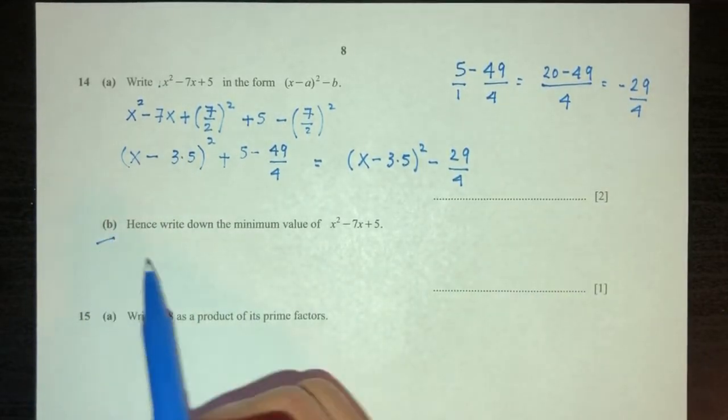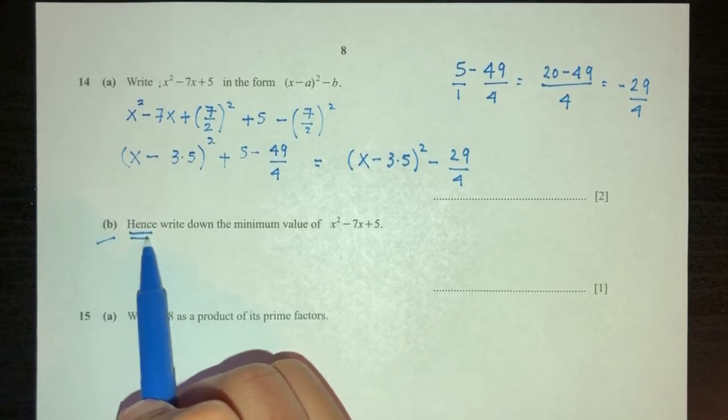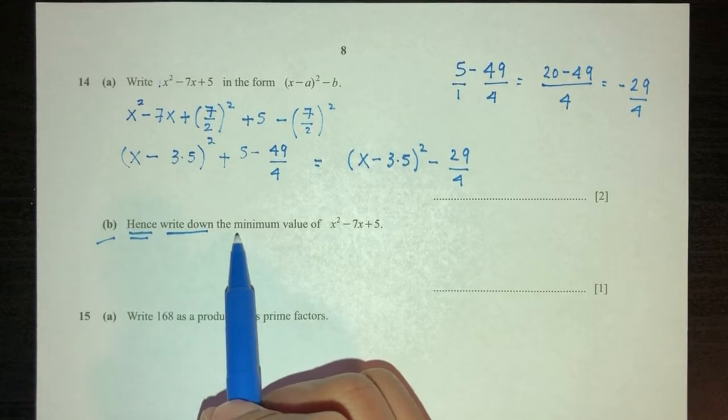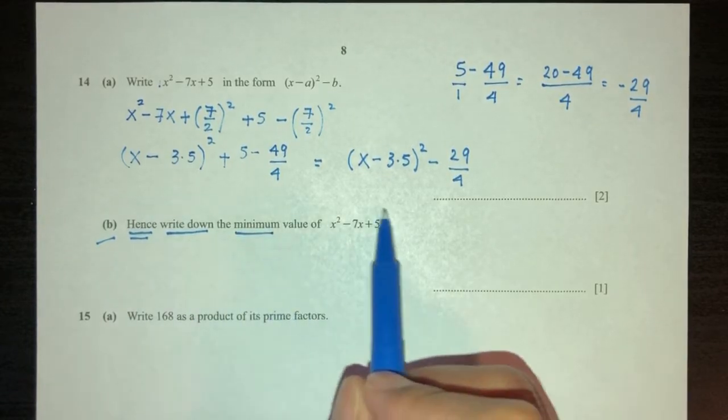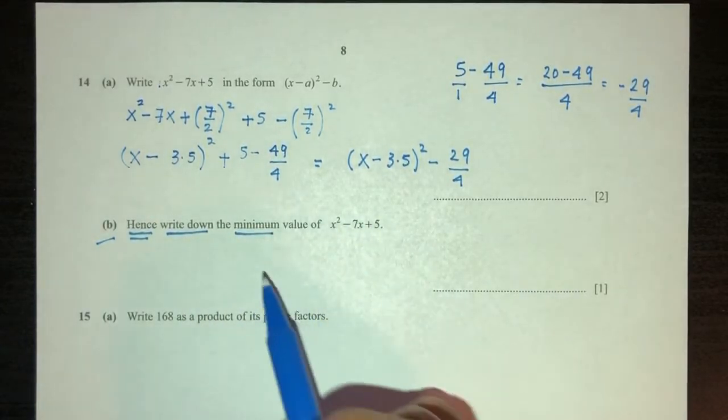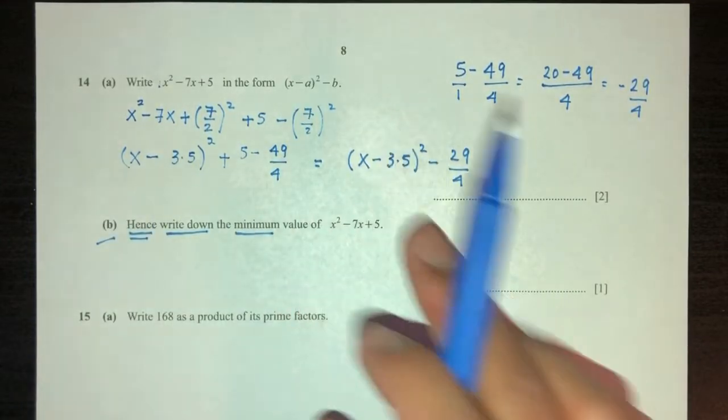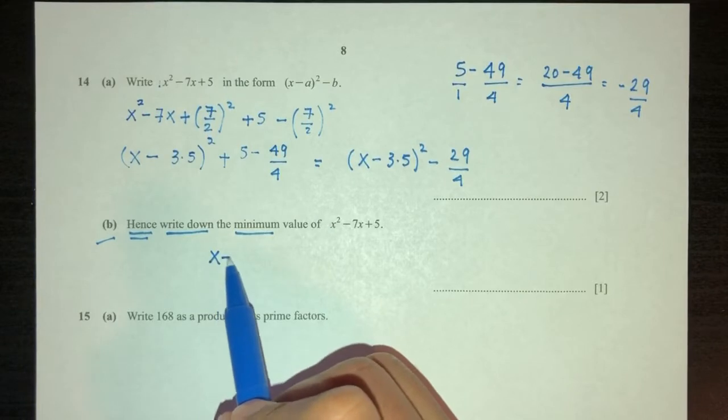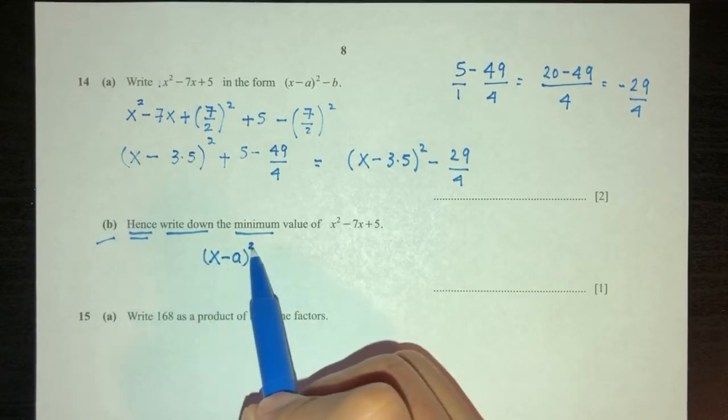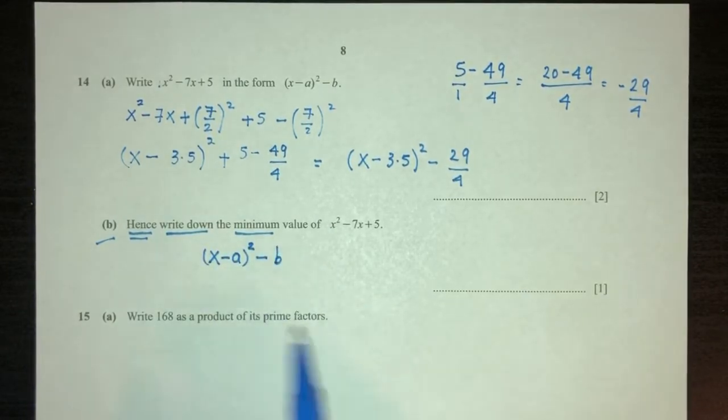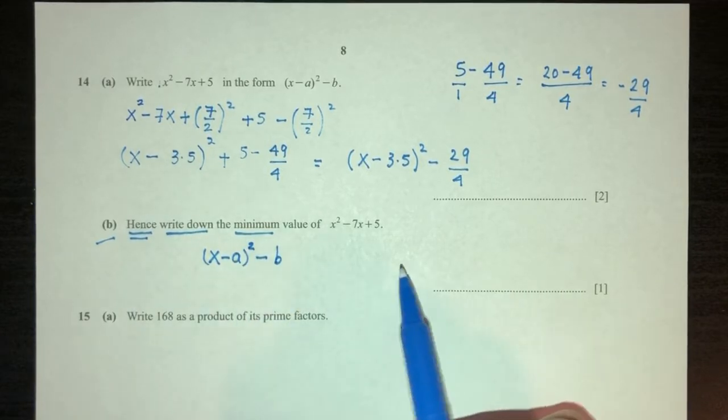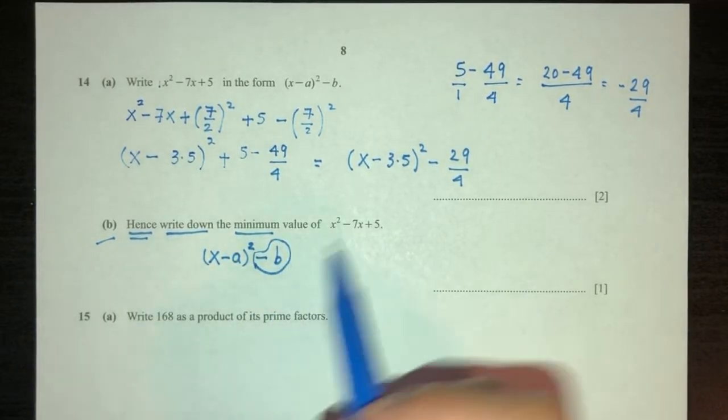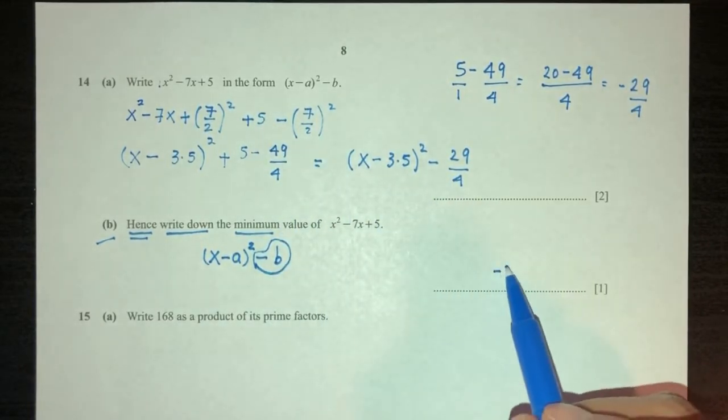Now part b, write down, so hence using your answer from part 1, write down the minimum value of this equation. So the value is always, so once you complete the squares, will be in this form or in this form. So let's say it will be in this form. Once you finish completing the squares, now to find the max or the minimum value, it will always be this number right here. So you will take the value here, which is minus 29 over 4.